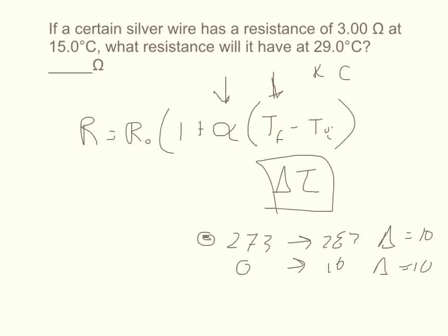The temperature coefficient of resistance is different for every material, so silver has a temperature coefficient of resistance that you have to look up on a chart. It's 0.0038.